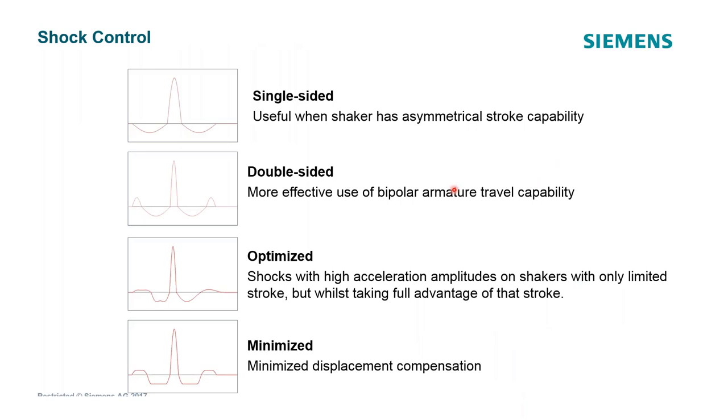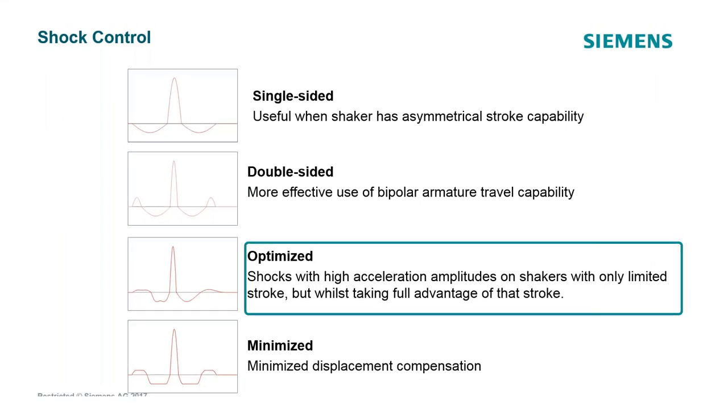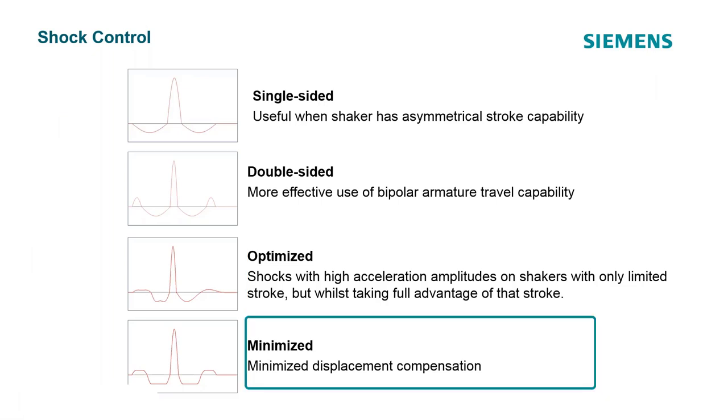There are a couple of different pre and post-pulse types that you can use, such as single-sided, double-sided, optimized, and minimized. The benefit for single-sided is it's useful when a shaker has an asymmetrical stroke. Double-sided is useful for a bipolar armature. Optimized is good with shocks with high acceleration amplitudes on shakers with a more limited stroke. And minimized is going to minimize the total needed displacement of the shaker while obtaining symmetrical displacement.